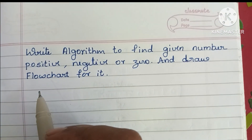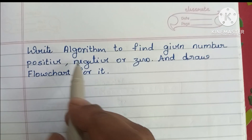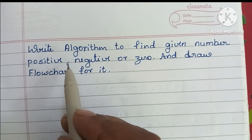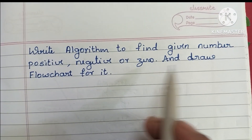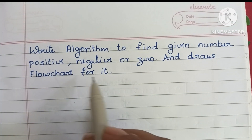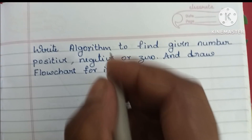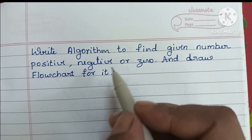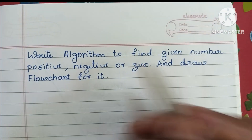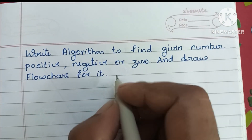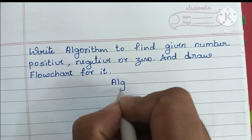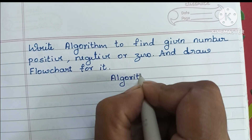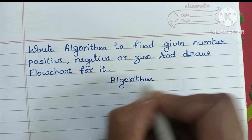In this video we are going to learn how to write an algorithm to find whether a given number is positive, negative, or zero, and draw a flowchart for it. An algorithm is a step-by-step process to solve a problem.